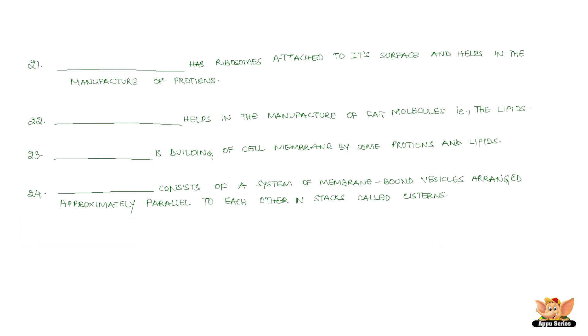Dash consists of a system of membrane-bound vesicles arranged approximately parallel to each other in stacks called cisterns. Dash are a kind of waste disposal system of the cell.